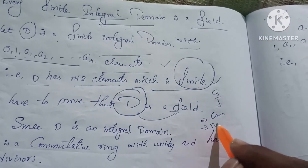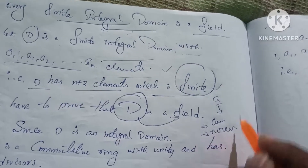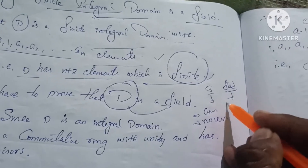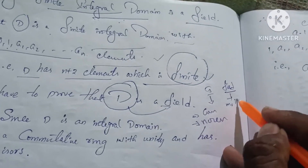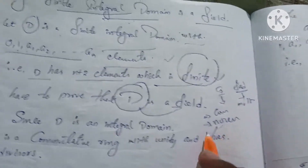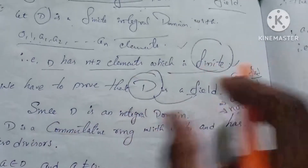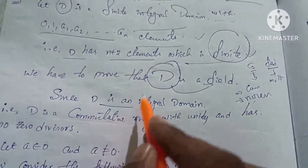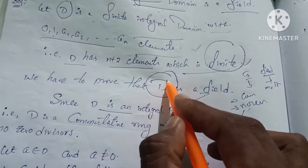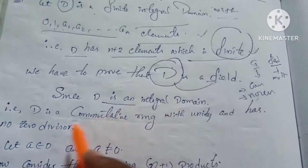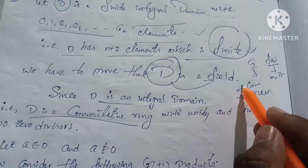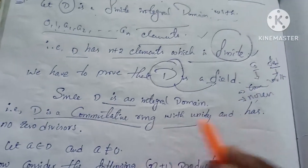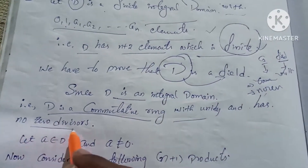Since D is an integral domain, D has no zero divisors. To prove D is a field, we need to show the multiplicative inverse exists. D is a commutative ring with unity and has no zero divisors.